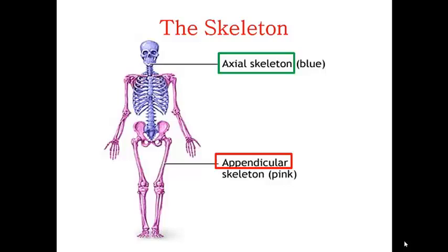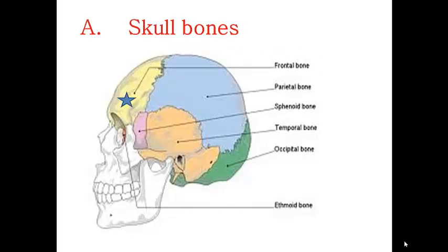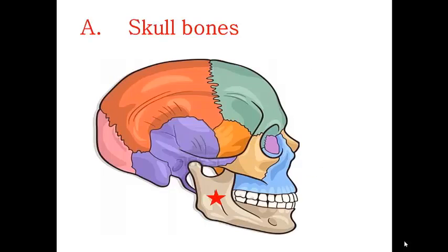We will start by discussing the axial skeleton. First, the bones of the skull: the frontal bone, the parietal bone, the temporal bone, the occipital bone, and the sphenoid bone. Together, these bones form the cranium. Then we have the mandible, the maxilla, the zygomatic bone, and the nasal bone, which form the facial bones.